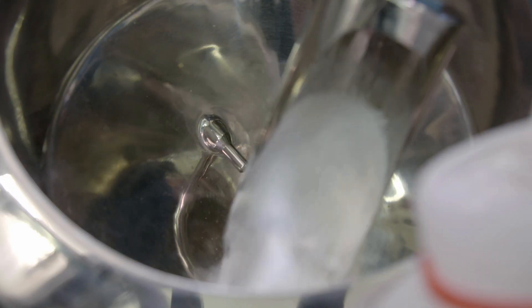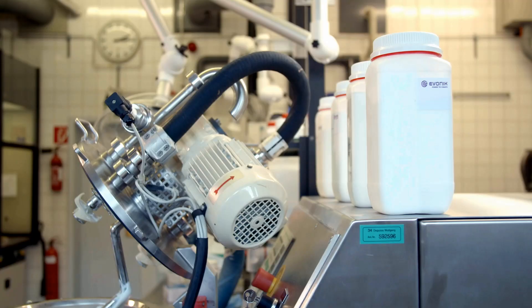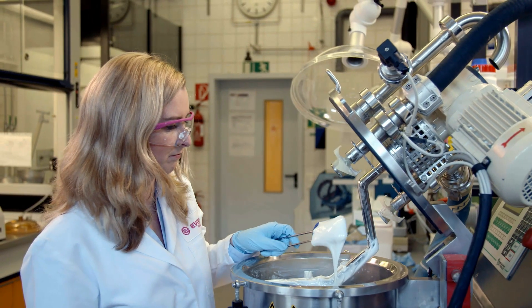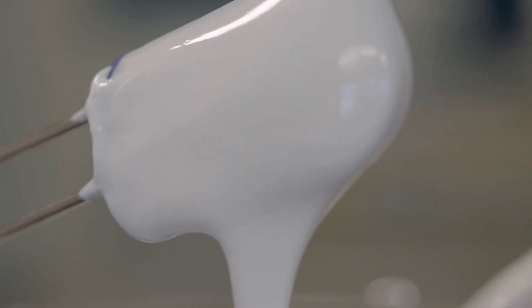Precipitated silicas are used, for example, in the production of toothpastes. Here, the silica ensures that the dental cream is viscous and thus easily dispensed.